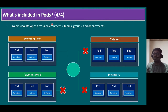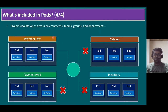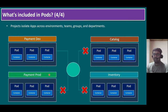The final point about what's included in pods: projects isolate apps across environments, teams, groups, and departments. Similar to how virtual machines on an ESXi host are completely isolated from each other, pods assigned to different projects are also isolated. For example, you might have a payment development project, a payment production project, a catalog project, and an inventory project — all isolated from each other. Different teams such as the development team, production team, inventory team, and catalog team each work within their own project and cannot access other departments' resources.